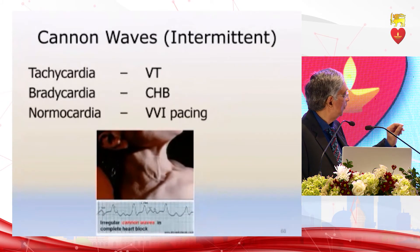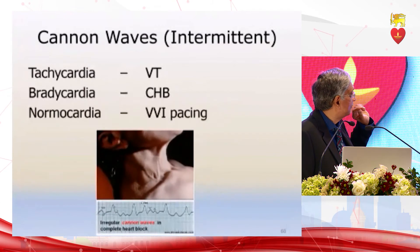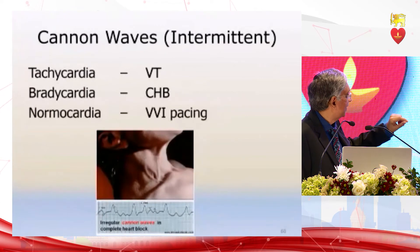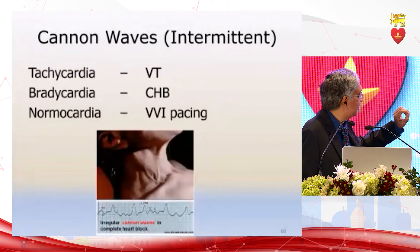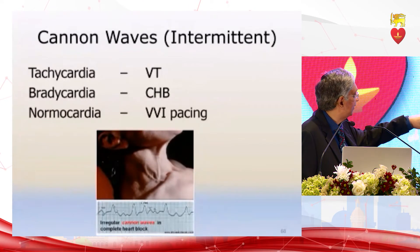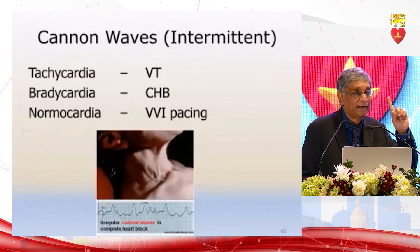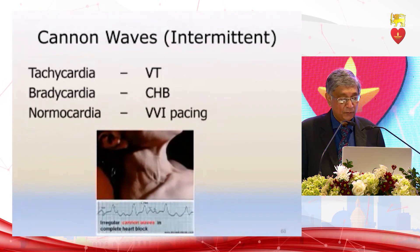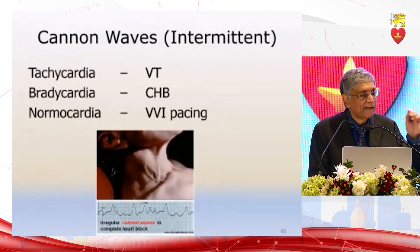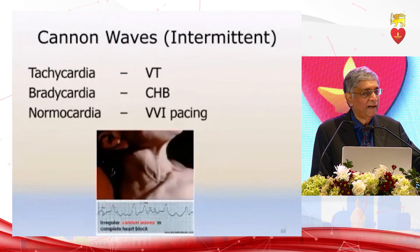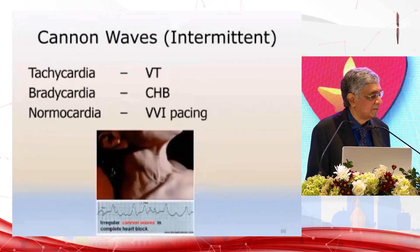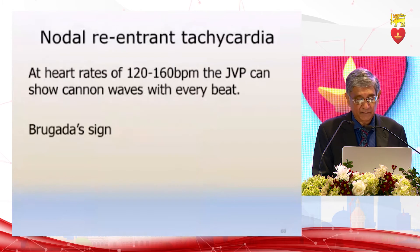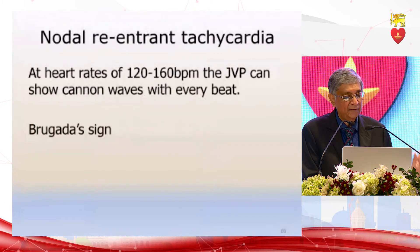Look at the internal jugular — not the external jugular — and you see that occasionally the cannon wave comes through between the two heads of the sternocleidomastoid intermittently. Whether the rhythm is VT, complete heart block, or a pacemaker, these cannon waves are pathological.